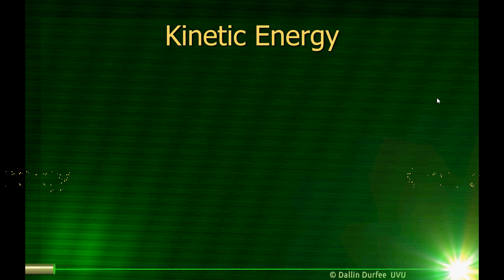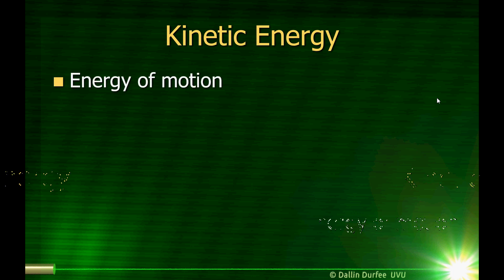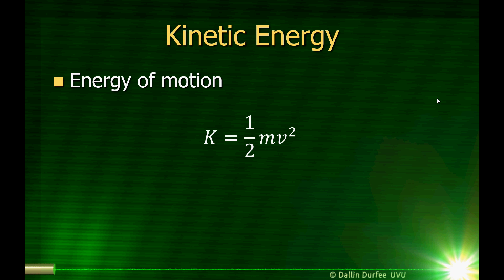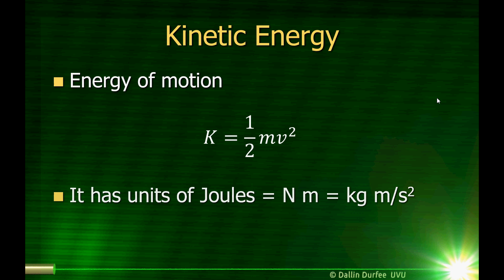Now for the important stuff. So first of all, kinetic energy is the energy of motion — it's the energy that has to do with the fact that something is moving. The kinetic energy is just equal to one-half mv squared. It doesn't matter what direction the object's moving; that v there is just the magnitude of its velocity. Like all energies, it has units of joules in the SI system. A joule is a newton times a meter, or a kilogram meter squared per second squared. Kinetic energy is a scalar — energy in general is a scalar.